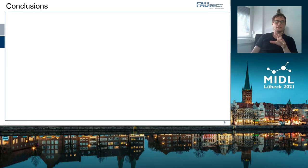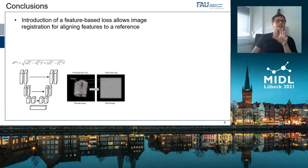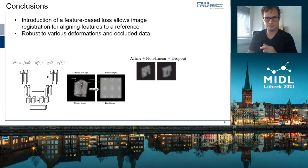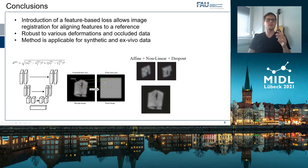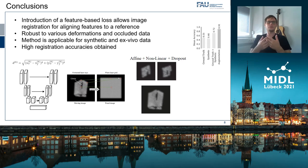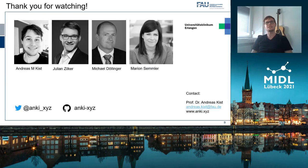Taken together, we introduced a novel feature identity distance-based loss that allows image registration to align features to a grid reference. We showed that our method is robust to various deformations such as affine and non-linear ones, and can cope with occluded or missing points. We further showed that our method works not only on synthetic but also on experimental ex vivo data, obtaining over 91% accuracy, rendering our fully automatic method highly useful for structured light endoscopy. Thank you for watching, and I look forward to the discussion section.